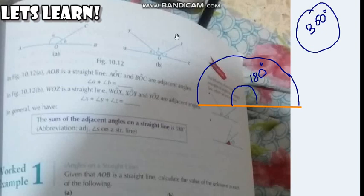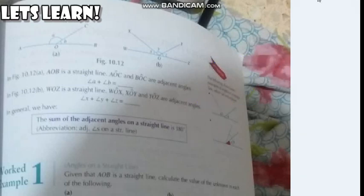So if we look up here again, what are basically angles in a straight line? Adjacent angles are nothing but angles in one straight line.